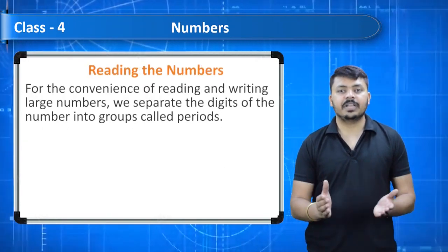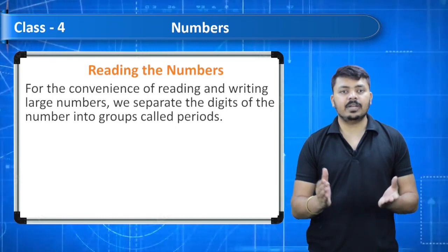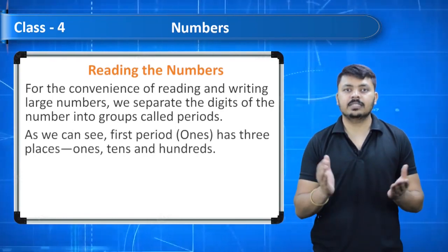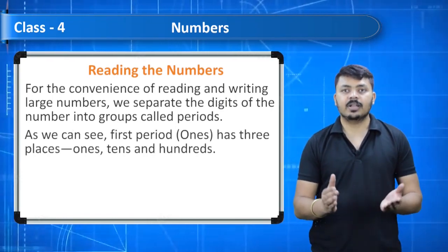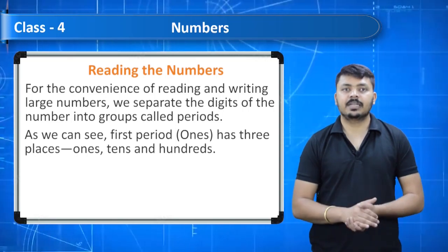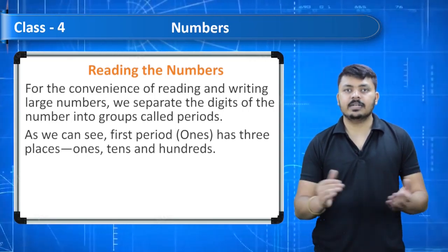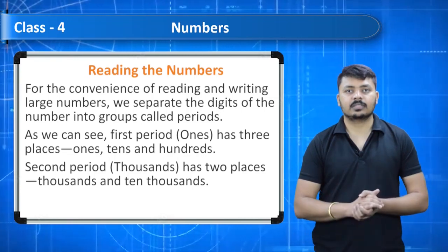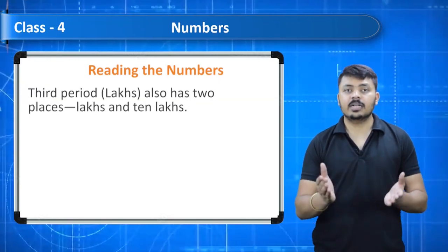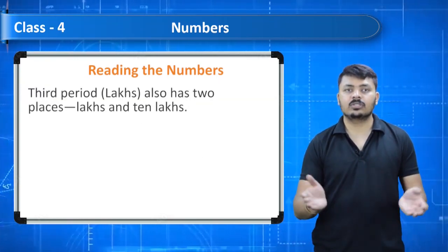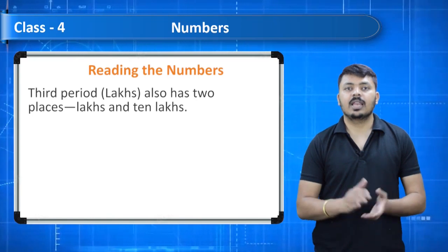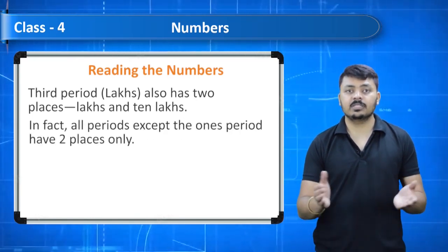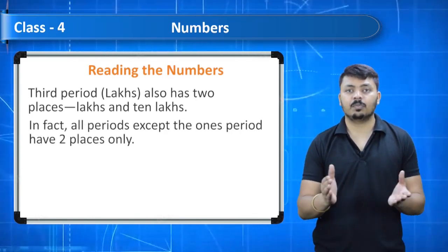For the convenience of reading and writing, large numbers separate the digits into groups called periods. The first period, ones, has three places: ones, tens, and hundreds. The second period, thousands, has two places: thousands and ten thousands. The third period, lakhs, also has two places: lakhs and ten lakhs. In fact, all periods except the ones period have two places only.